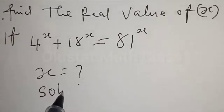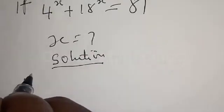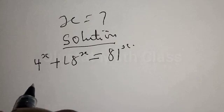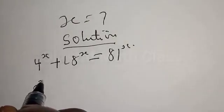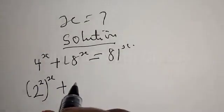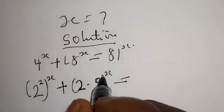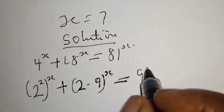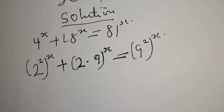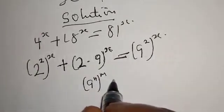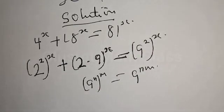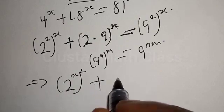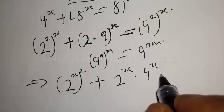Solution. We have 4 raised to power x plus 18 raised to power x equal to 81 raised to power x. This can be written as: 4 raised to power x is the same as 2 squared raised to power x, plus 18 equals 2 times 9, raised to power x, equal to 81 which is 9 squared raised to power x. Using the rule (a^m)^n = a^(mn), this becomes 2 raised to power 2x plus 2 raised to power x multiplied by 9 raised to power x, equal to 9 raised to power 2x.